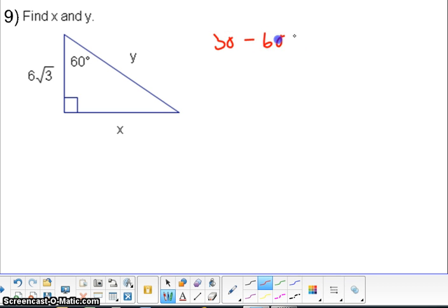we know the 30, 60, 90 will always have a pattern of x is the smallest, it's opposite of the smallest angle, and x root 3 is always opposite of the 60 degree, and 2x is always opposite of the 90. So if you keep that in mind...